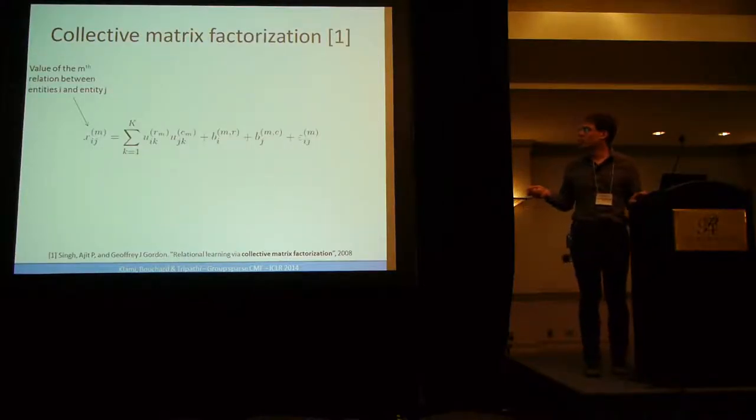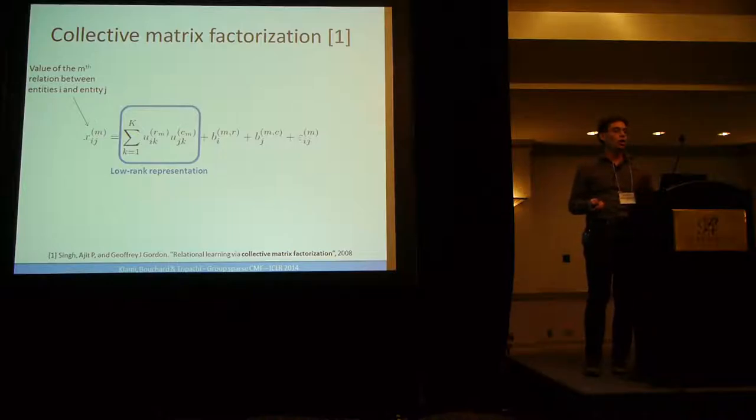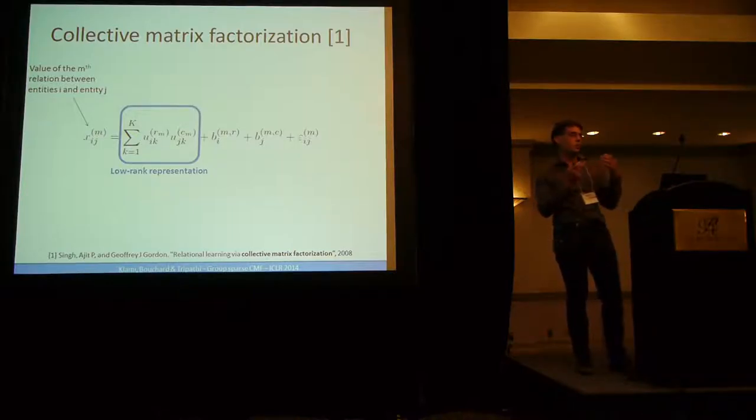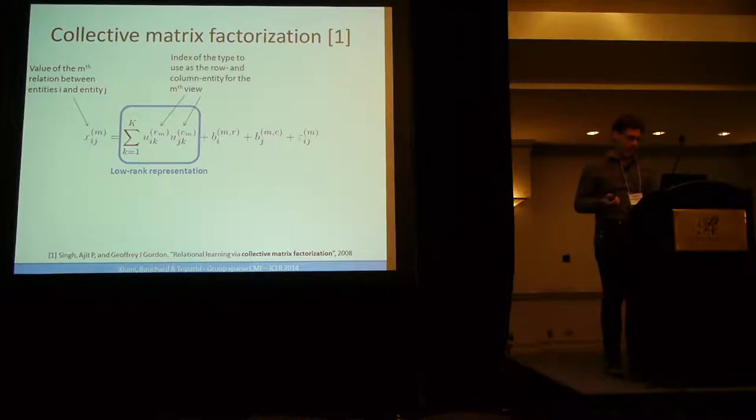Mathematically, the model is pretty simple. You express the value of the matrix M for entity I as a row and entity J as a column as a latent representation, like having a latent matrix for each of the views. You have to select the embedding, the latent representation of each matrix, using this RM and CM variable which represents the schema of your database. To express the M-th view, you will need to have the entity type RM for the row and the entity type CM for the column.